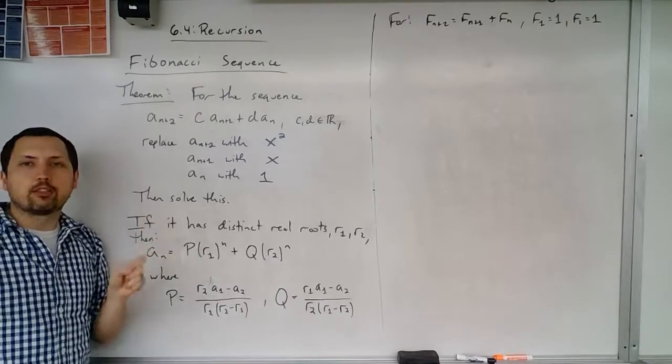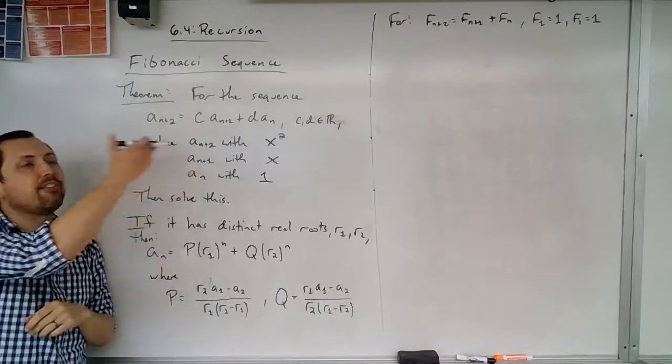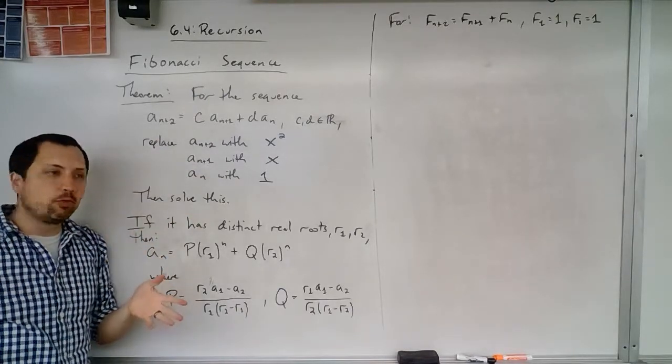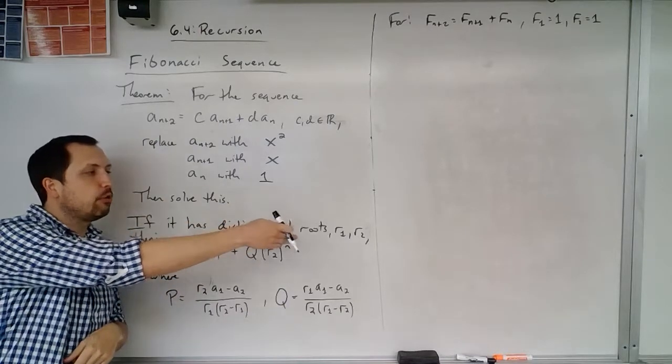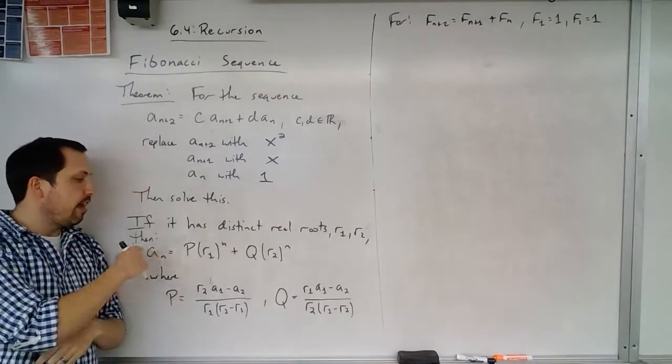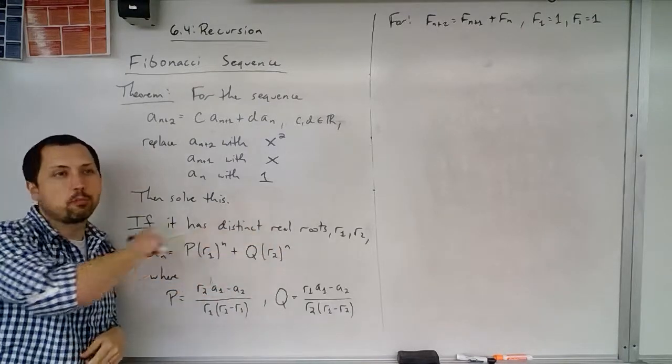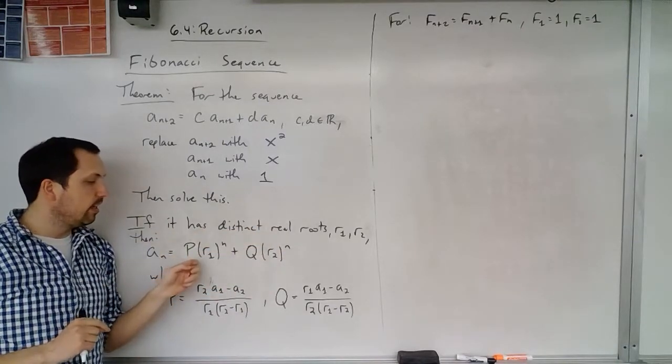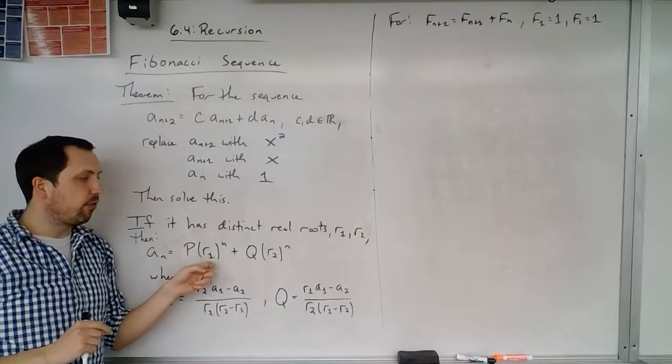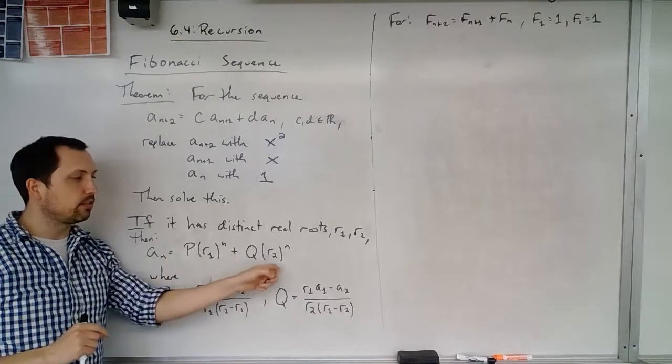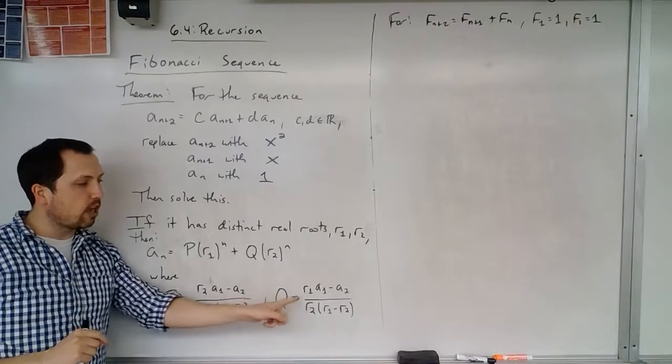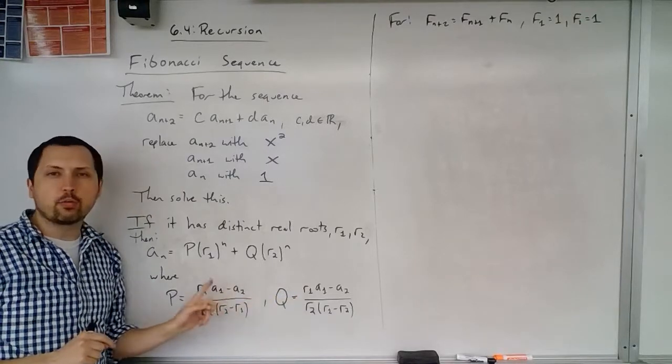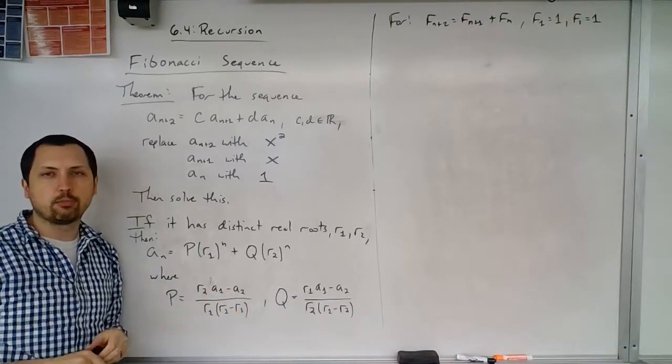Then we're going to solve this. It's going to be some equation that now has x's in it and we're going to find the roots of that. The theory says that if it has distinct real roots r1 and r2, then we have the following closed formula: P times the first root raised to the n plus Q times the second root raised to the n. But these P and Q are going to be based off of what the roots are, as well as what our first two terms, a sub 1 and a sub 2, are.